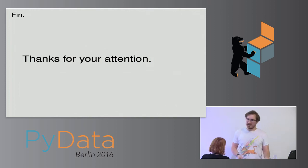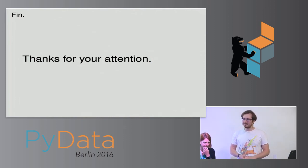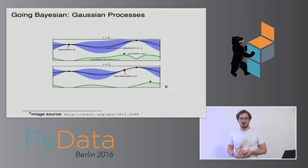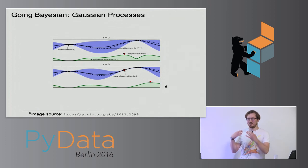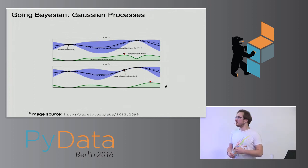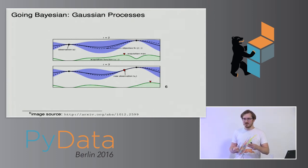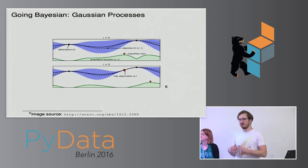Question: how did I define the acquisition function? That's a good question because it's something you have to decide — it's kind of a hyperparameter itself. You have to look into the papers to see the actual math, but it's some kind of marginalization of your expected improvement: how much chance do I have here to improve over what I've seen before?